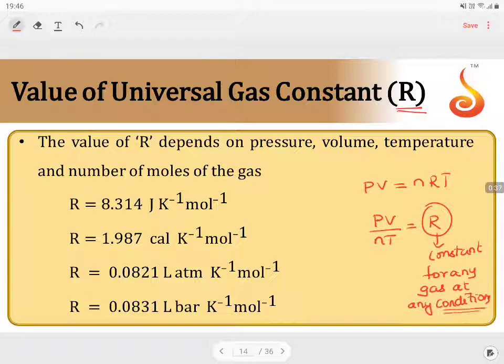At any experimental conditions, that means you can change pressure, you can change volume, you can change number of moles, you can change temperature. Whatever may be the variable that has been changing, your ratio of PV by nT is always constant for any gas, and that will be taken as universal gas constant.